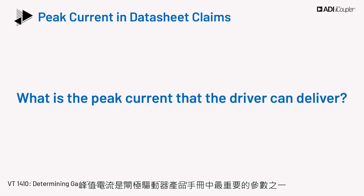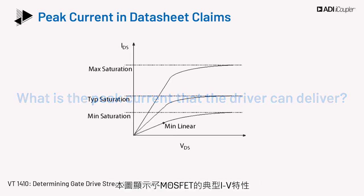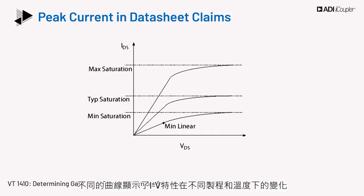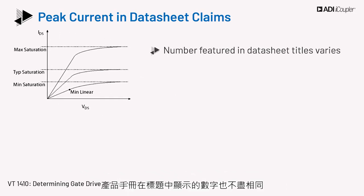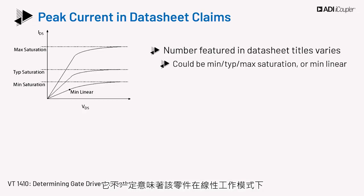Peak current is one of the most important parameters in gate driver datasheets, but doesn't tell the whole story. Peak current definitions vary between manufacturers, so be sure to double-check each datasheet's definition. This image shows the typical IV characteristics of the MOSFET. Different curves show the variation of the IV characteristics across different processes and temperature. The number featured in a datasheet's title could be the min, typical, or max saturation current that a part can deliver, and does not necessarily imply that the part delivers the rated current as a minimum current in the linear mode of operation.